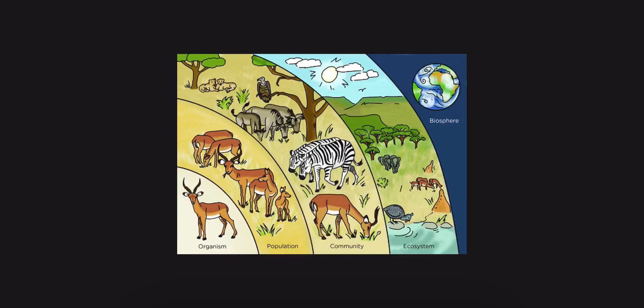Our next level is a population. A population is one type of living thing in an ecosystem. So for example, here is the antelope that we talked about, right here. But there is more of the same animal. This is an antelope, that is an antelope, this is an antelope, and that is an antelope. So our population is one type of living thing in an ecosystem, but more of them.